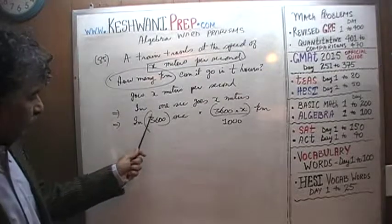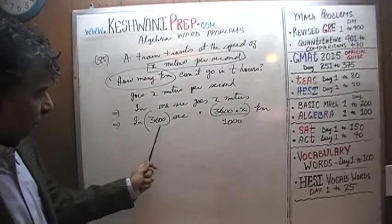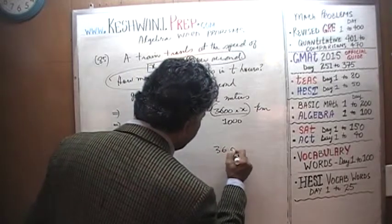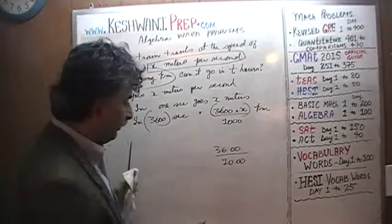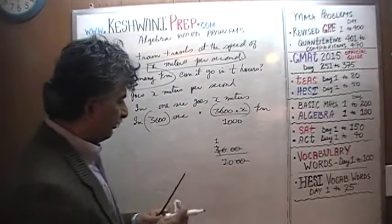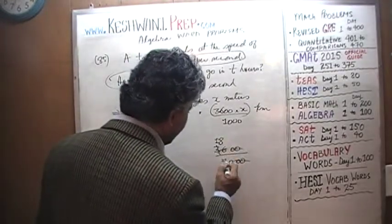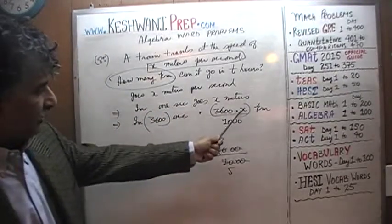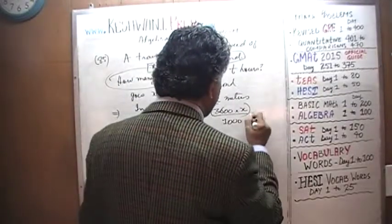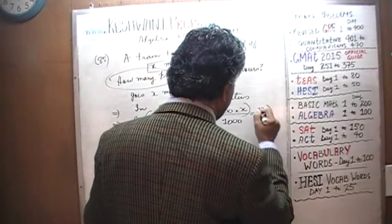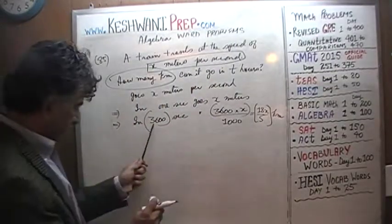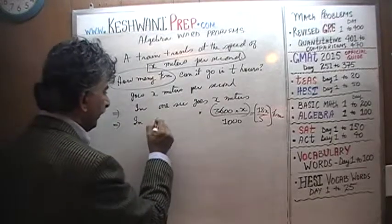In 3600 seconds — which is one hour — it goes 3600x divided by 1000 kilometers. Let's simplify: 3600 over 1000. Dividing top and bottom by 100 removes two zeros, then dividing by 2 gives us 18 over 5. So it goes 18 over 5 times x kilometers in one hour.